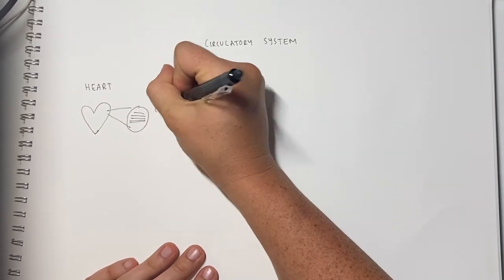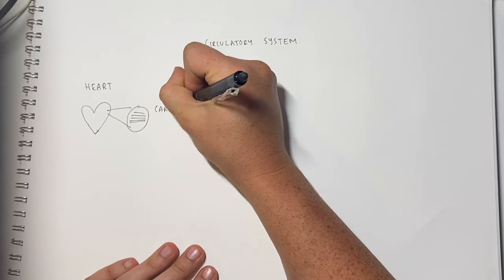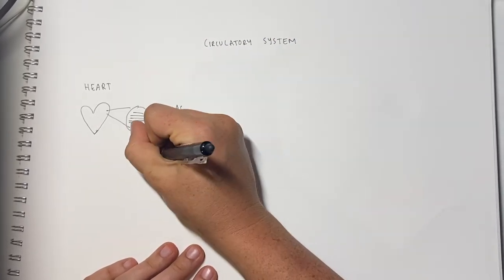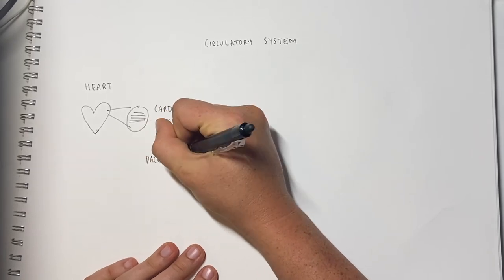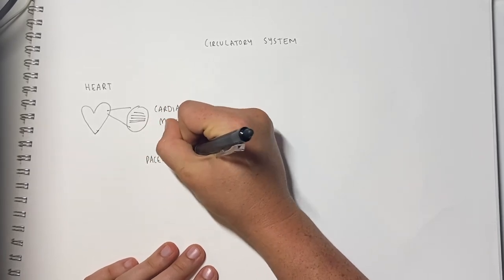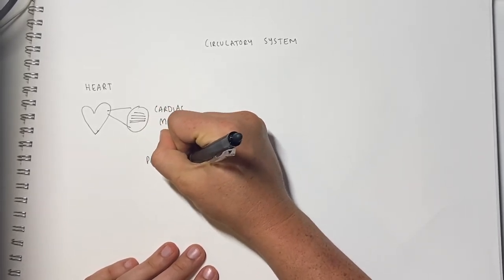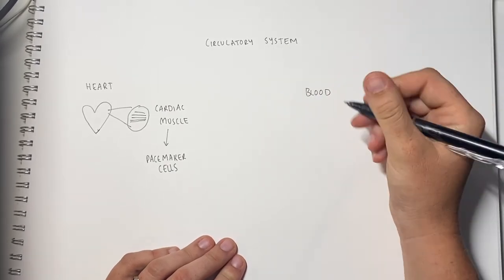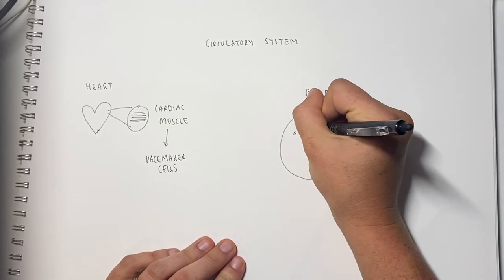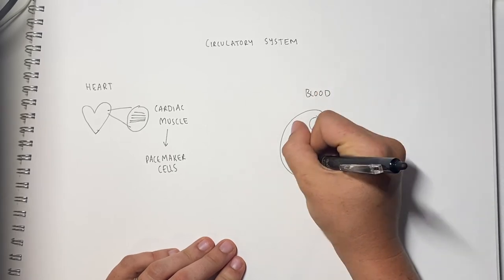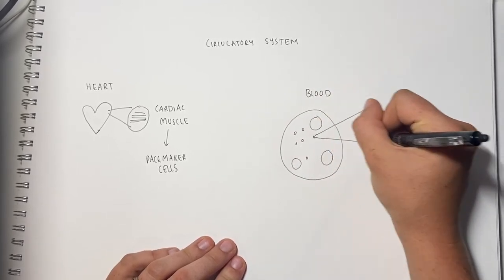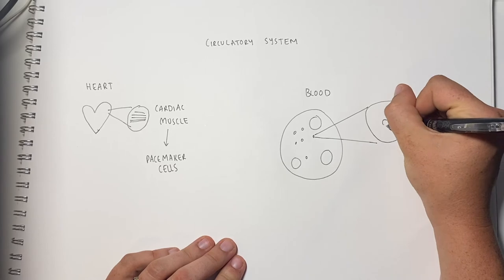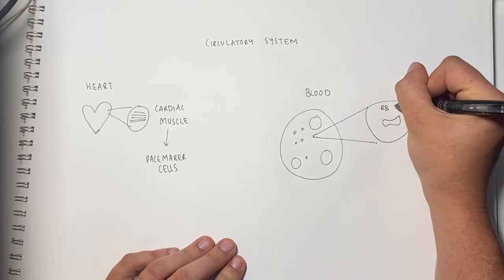The involuntary cardiac muscles have specialized cells called pacemaker cells. The nervous system sends signals to these pacemaker cells that prompt them to speed up or slow down contractions of the heart, causing changes in heart rate. Cardiac muscle cells appear in long fibers and have a single nucleus. This shape allows for the tissue to contract continuously. Another part of the circulatory system is the blood.